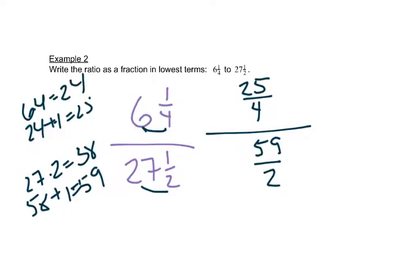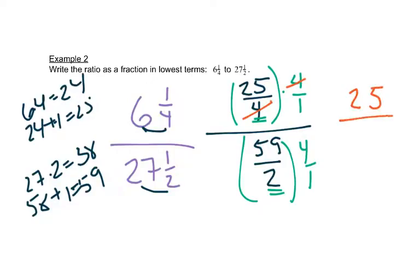We talked back in our fraction chapter, chapter 3, about complex fractions. It was at the end of that chapter, but we want to multiply by the common denominator for the two small fractions. In this case, that's 4. So I'm going to multiply this fraction by 4 and this fraction by 4. Here that just makes the 4 cancel out and that leaves me with 25 on top. Here it makes this 4 become a 2. So we have 59 times 2 is 118. So now we have 25 over 118.